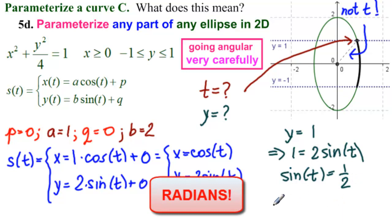Now we can know this by heart, and say, yes, t equals pi over 6. Sine of pi over 6 is 1 half.